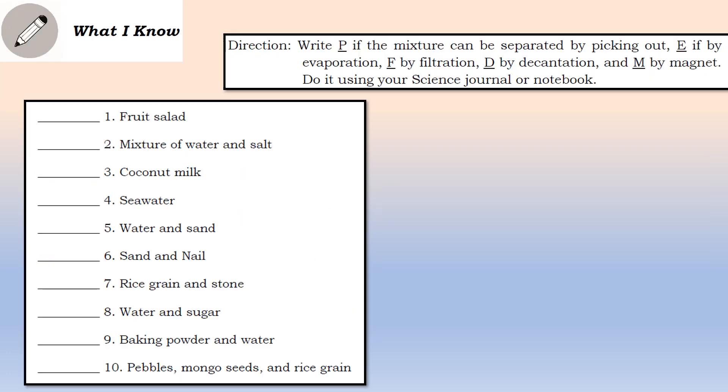But before that, we would like to check first what you have learned in our past lesson. Isulat nyo ang P kung ang mixture ay pwede nating i-separate sa pamamagitan ng pag-pick out, letter E kung sa pamamagitan ng evaporation, letter F kung sa pamamagitan ng filtration, letter D for decantation, at letter M for magnet. Gawin nyo yan gamit ang inyong science notebook.